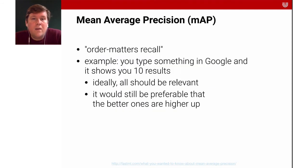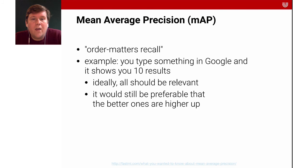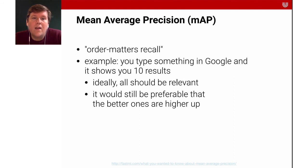Another important metric is mean average precision, which is related to recall but one where order matters. A common example is typing something into Google and getting 10 results — you want them all relevant, but it's still better that the better ones are ranked higher. So this takes two things into account: you want all the relevant examples, but you also want the good ones on top. It's one way to account for ranking.